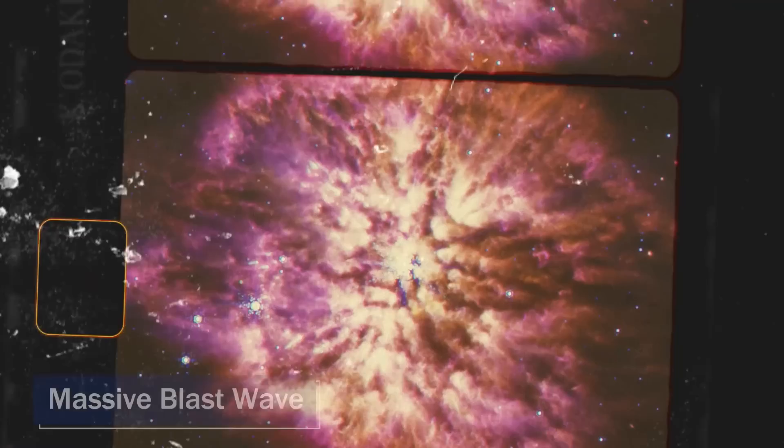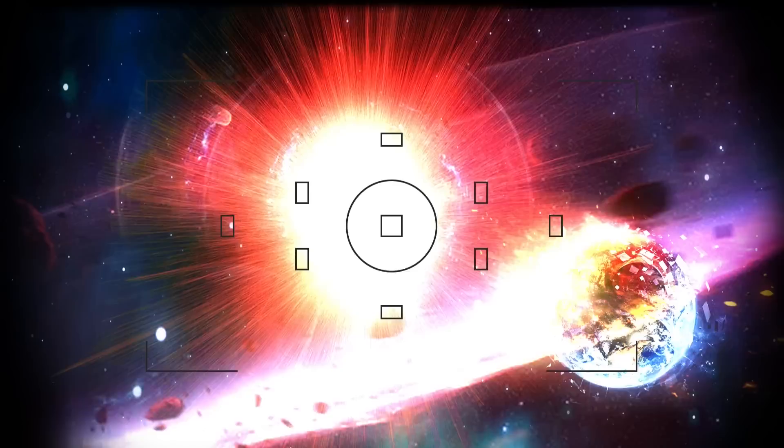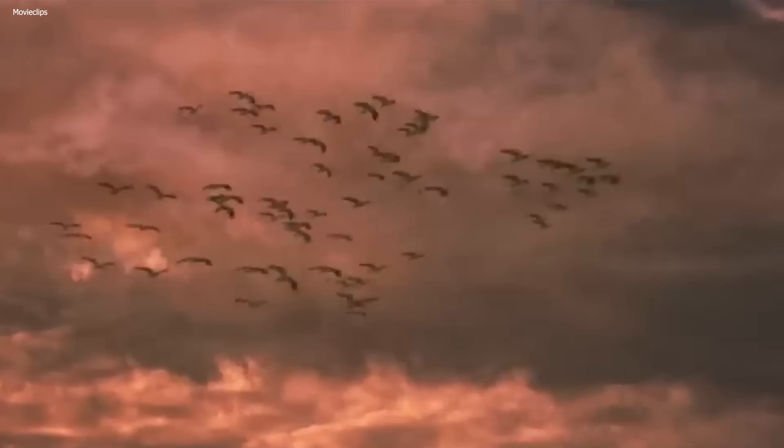There's also the potential for a massive blast wave. When a supernova explodes, it creates a shock wave that can travel through space at incredible speeds, potentially colliding with other objects in its path. The same ones that lead the way for new stars and planets to be born can also do the opposite. If a supernova were to occur nearby, this blast wave could potentially cause significant damage to the Earth's atmosphere and even cause mass extinctions.